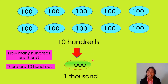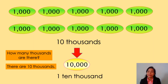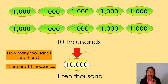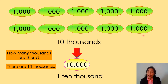So ten hundreds is the same as one thousand. Look at this number. What number is it? It's one thousand. How many thousands are there? Let's count: one, two, three, four, five, six, seven, eight, nine, ten. There are ten thousands. Ten thousands is the same as one ten-thousand. Let's count: 1,000, 2,000, 3,000, 4,000, 5,000, 6,000, 7,000, 8,000, 9,000, 10,000.